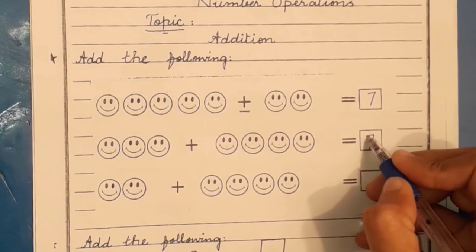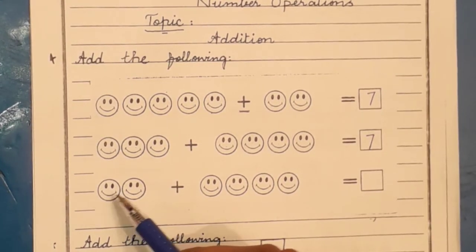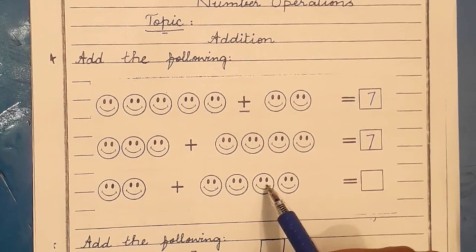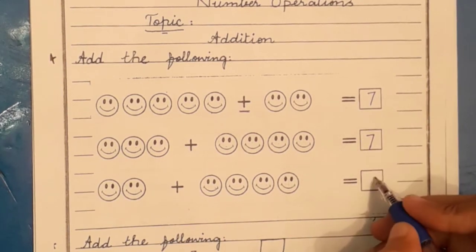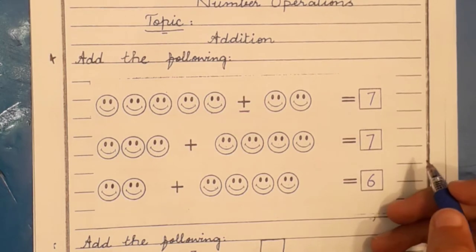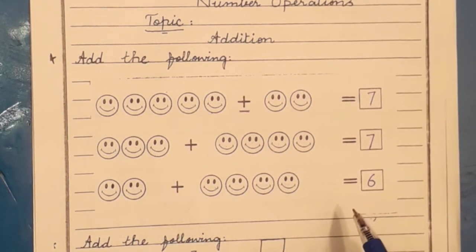So there are seven smileys. Next count. One, two, three, four, five, six. So there are six smileys there. Objects through, we have counted them.